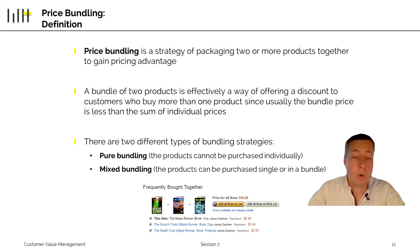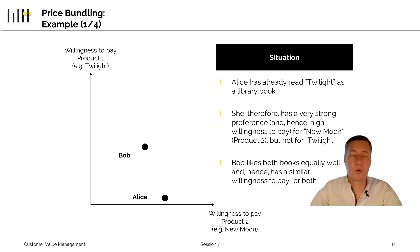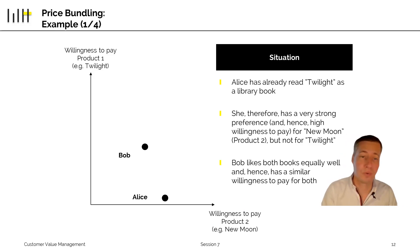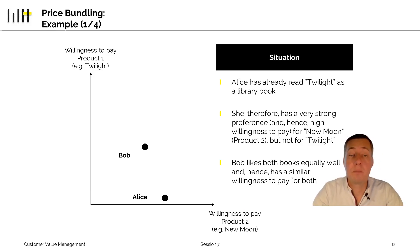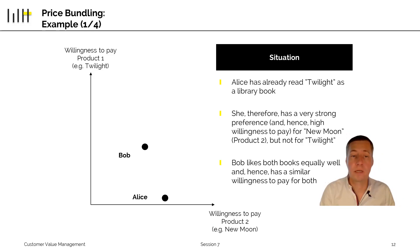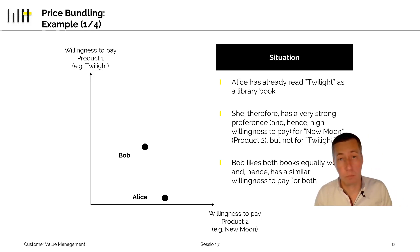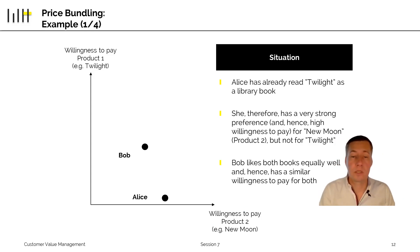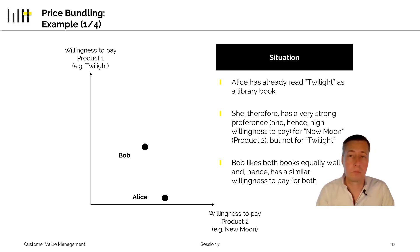To understand when these different strategies make sense, let's look at the Twilight books — the story of a vampire and a werewolf. There's book one, Twilight, and book two, New Moon. There are two people in the market: Bob and Alice. Alice has already read one of these books as a library book, so her willingness to pay to buy it again is very low. However, she really likes the story, so her willingness to pay for the sequel is relatively high. Bob hasn't read any of these books, so his willingness to pay is about the same for both, and specifically lower for book two than Alice's, since he hasn't even read the first book yet.